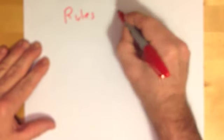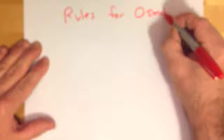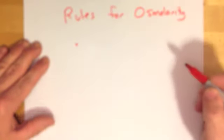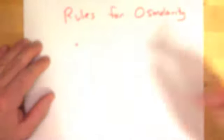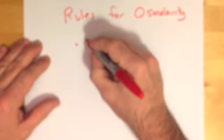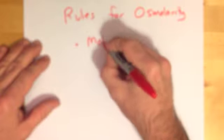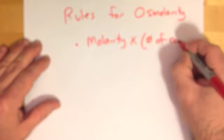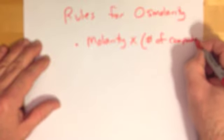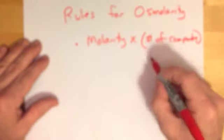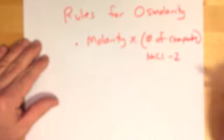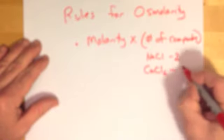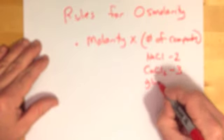So now we're going to talk about a few rules for osmolarity. And really only three. First of all, to determine the osmolarity of any particular substance, we're going to take the molarity of that substance, times the number of components it breaks down to when we're talking about water. So for example, if we're talking about sodium chloride, that would break down to two things. Calcium chloride, would break down into three. Glucose does not break down, so we're only talking about one.